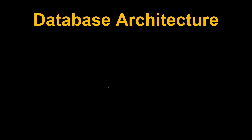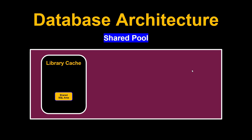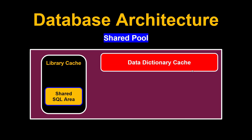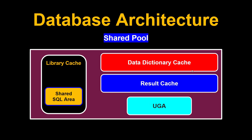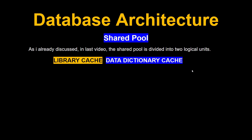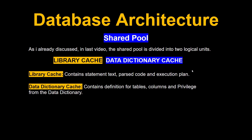The shared pool is a very interesting component. It contains a library cache, a data dictionary cache, a result cache, and the UGA. The library cache contains SQL statement text, parsed code, and execution plans. The data dictionary cache defines tables, columns, and privileges for the data dictionary. The library cache and data dictionary cache are the key components we discuss here.